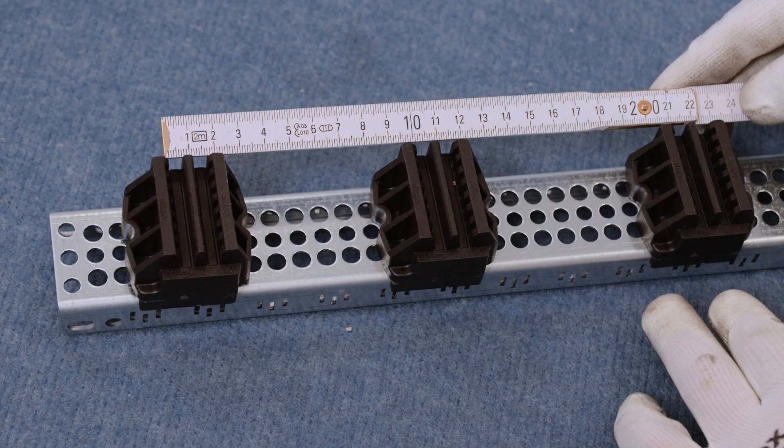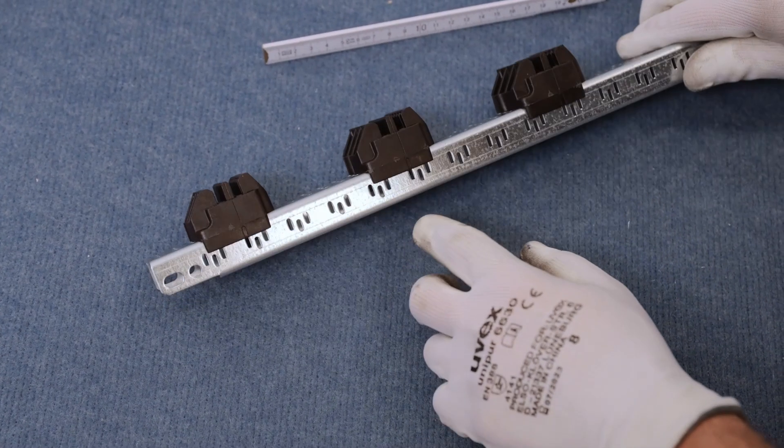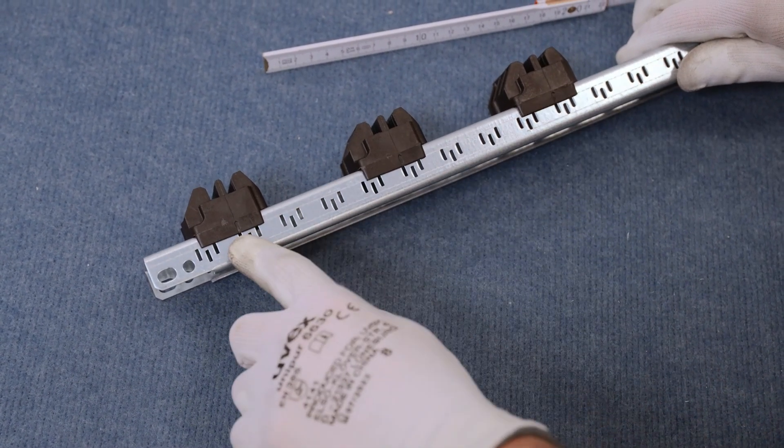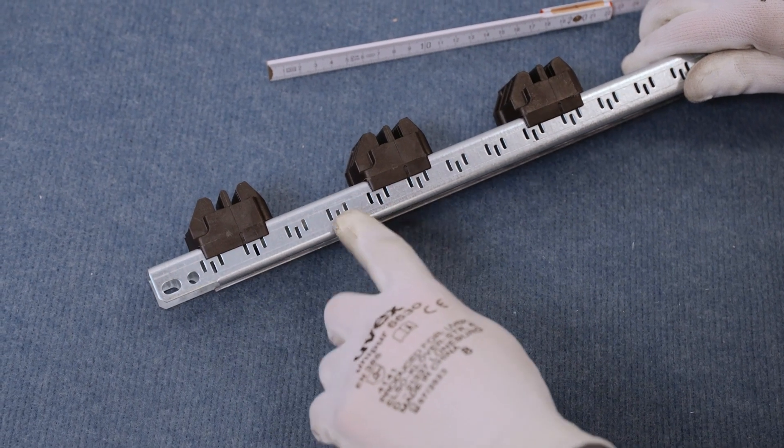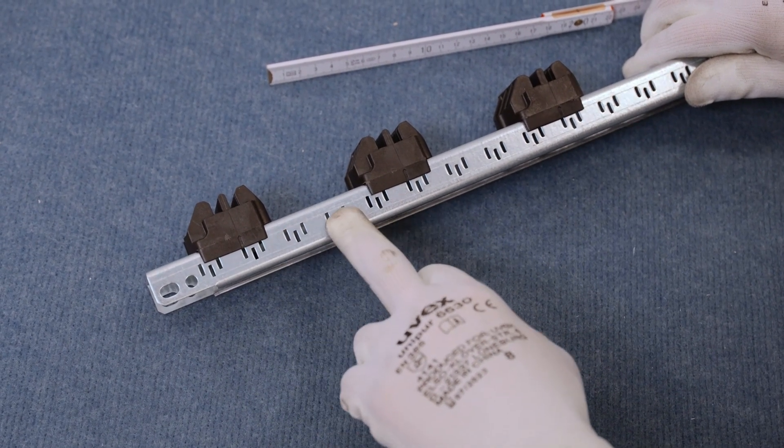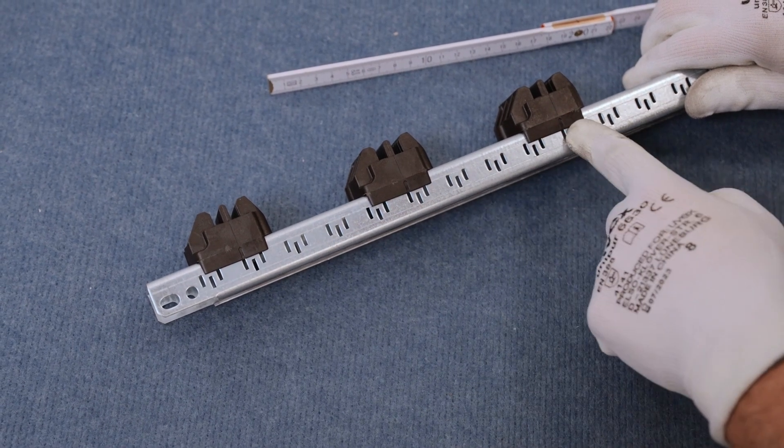Other possible distances are 100 millimeters, 125 millimeters, or 200 millimeters. There are visual aids on the pieces. Here the marker is set on the first hole. Four groups to the right equals 100 millimeters.